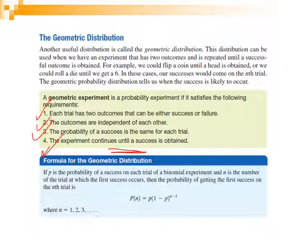If these conditions are satisfied, you are in a geometric experiment and should use this formula: P(n) = p × (1 − p)^(n−1), where p is the probability of success on each trial and n is the total number of trials at which the first success occurs. This formula gives the probability of getting the first success on the nth trial.